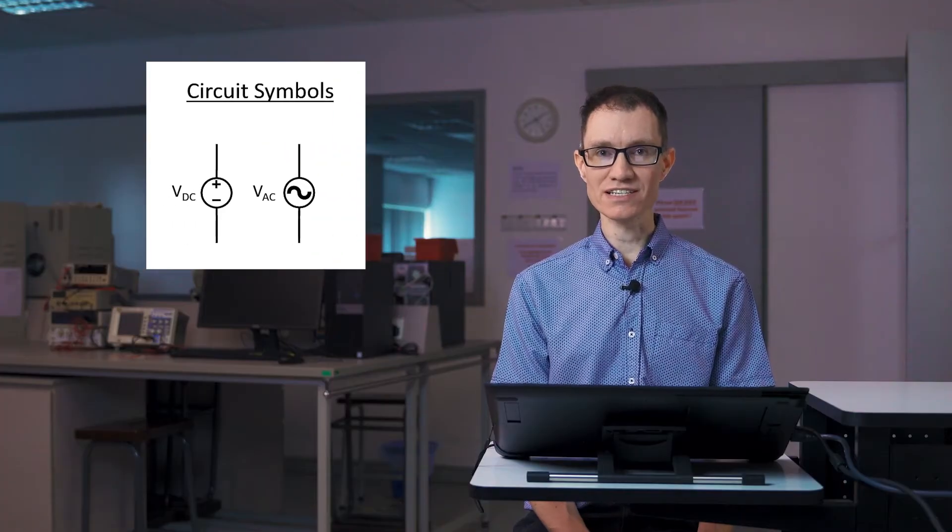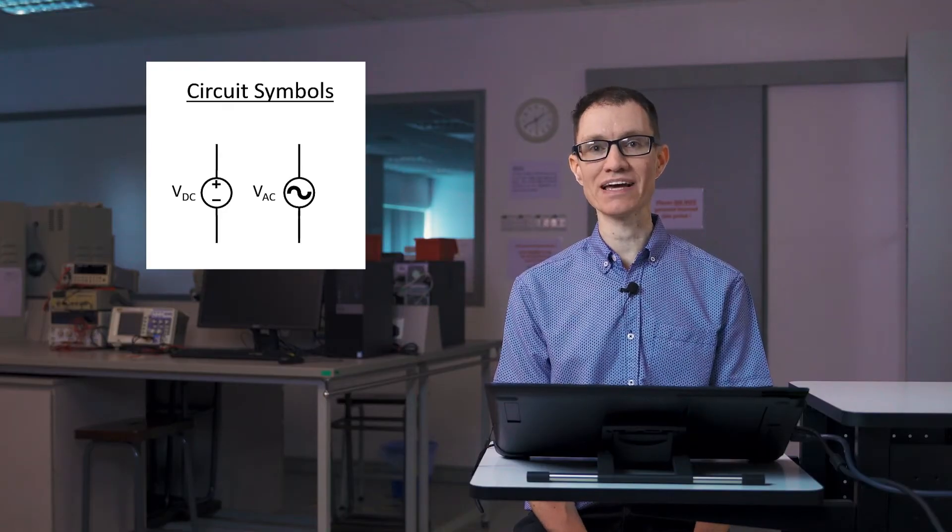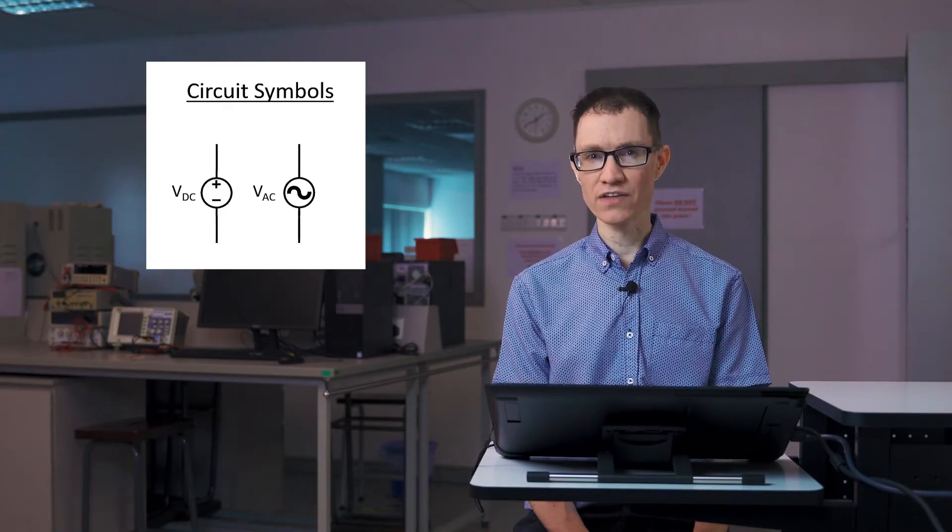A source where either the current or the voltage is changing periodically is an AC source. The circuit symbol for a DC source typically has a little plus and minus sign on it and the circuit symbol for an AC source typically has a little wavy line on it. The little wavy line is sinusoidal and it represents the fact that typically AC voltages that we encounter in our daily lives are sinusoidal.